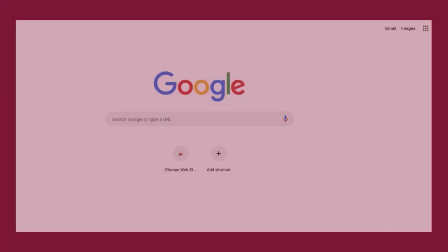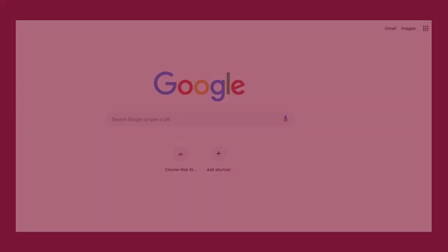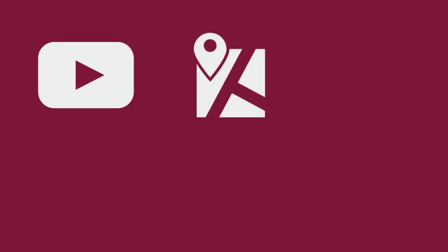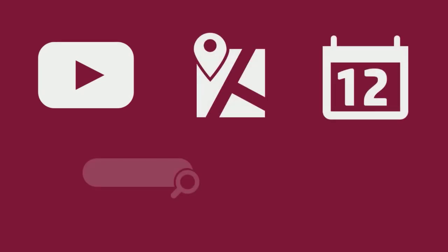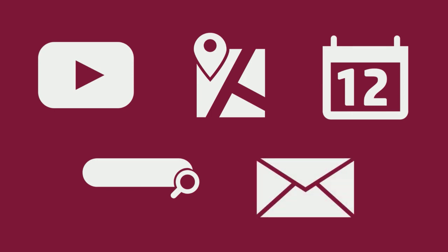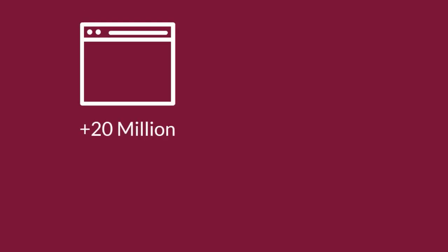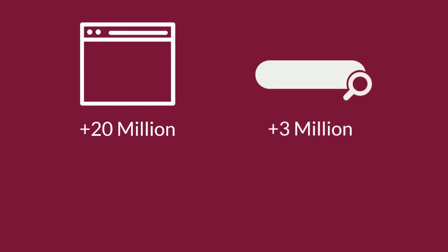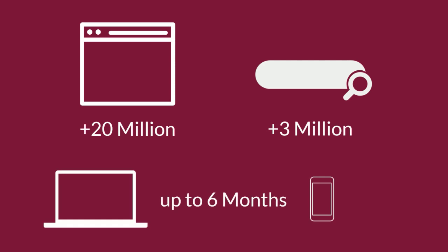Let's look at Google as an example. Every time you watch a YouTube video, go to Google Maps, put something in your calendar, search something on a Google search engine, or send an email, Google is collecting data. To give you an idea of just how much data Google collects: they collect over 20 million web pages per day, over 3 million daily search queries, and according to CNN, Google can track your searches on your individual devices for up to six months even if you're not logged into your account.